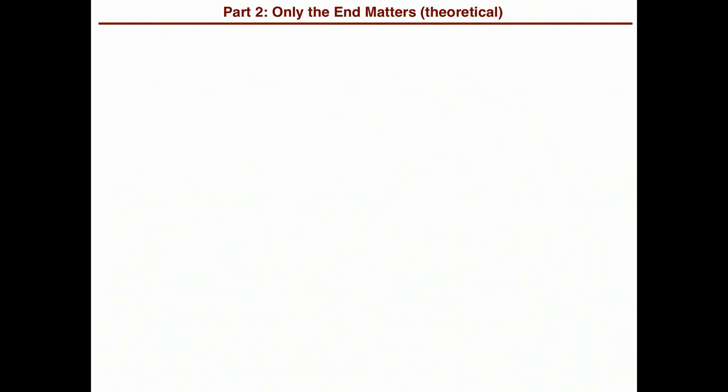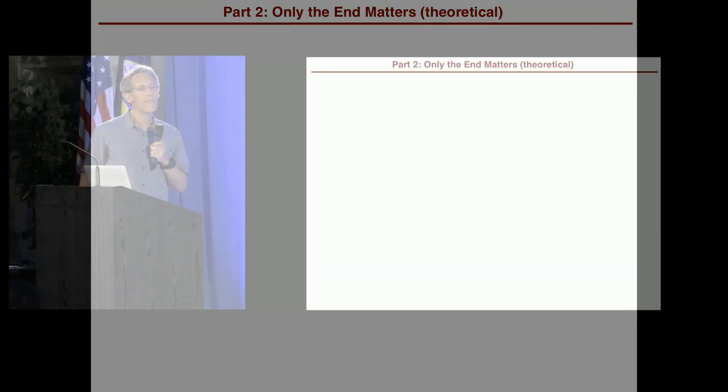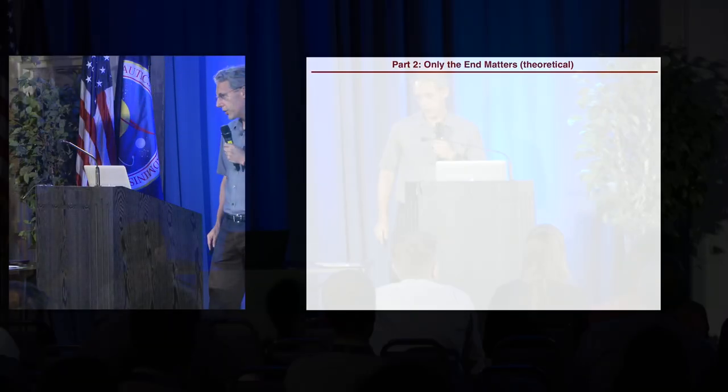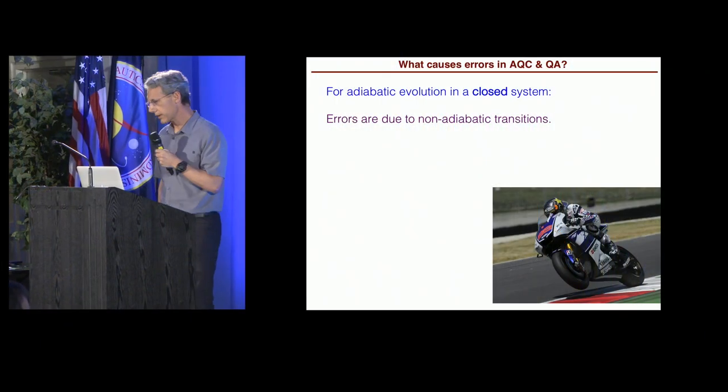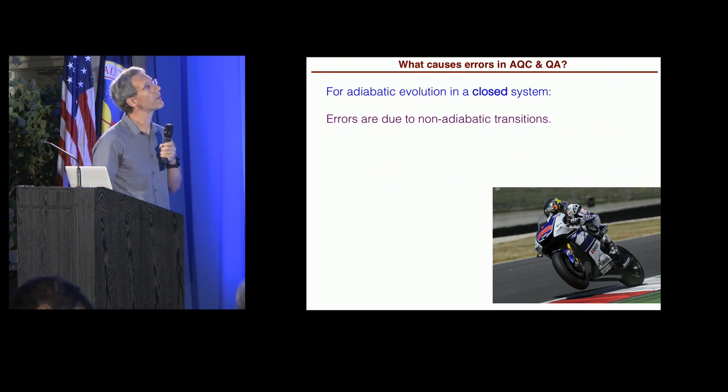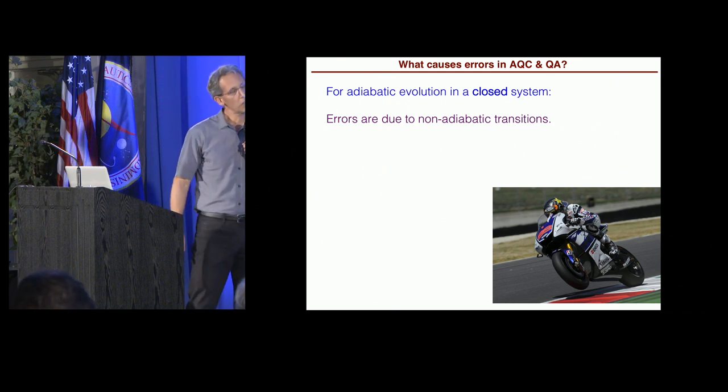Okay. So that's part one. Now let me move on to part two. So part two has got nothing to do with part one. It is related somewhat to the talk that we heard earlier today by Lucas Brady. So it is about quantum annealing and about quantum computing, really more about quantum annealing in the sense that I'm going to talk about how to reduce errors in an open quantum system. And this work is purely theoretical so far.